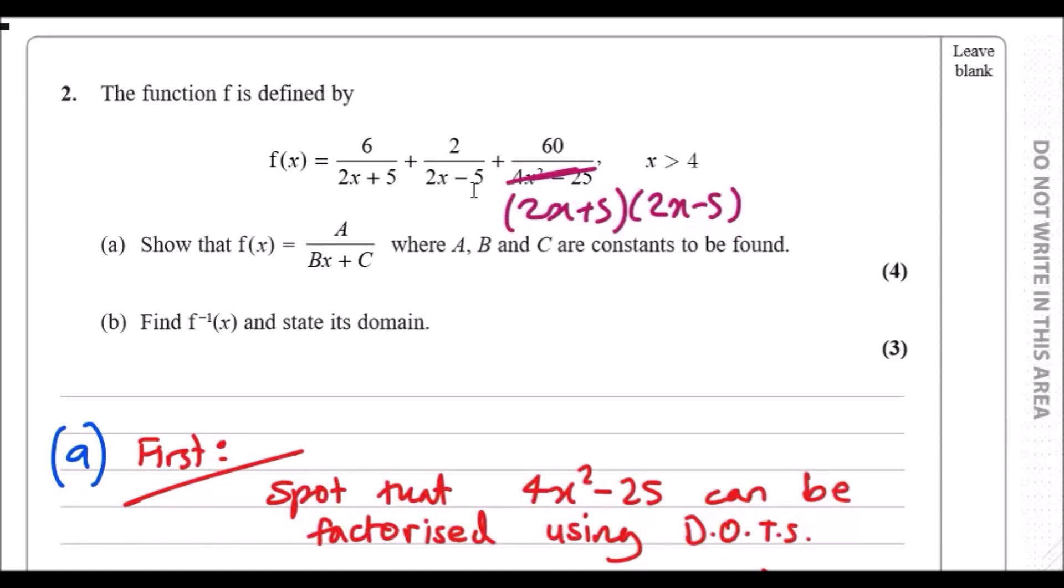So essentially when you combine this to a single fraction, you need to make sure that every single denominator has the same terms. For example, the first fraction is missing 2x minus 5, so this implies that you're going to times up and down by 2x minus 5, whereas the second fraction is missing 2x plus 5, so times that by 2x plus 5 up and down.